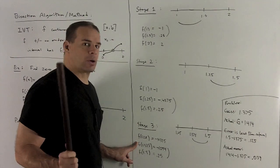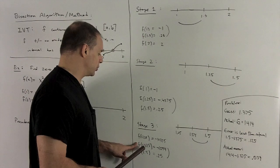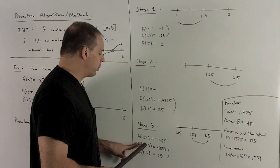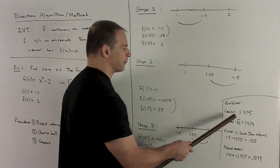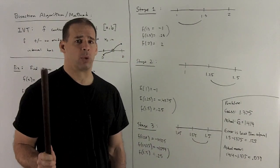So my estimate for the 0 is going to be where I stop. It's going to be the last midpoint I choose. So my estimate is going to be 1.375. The actual here is going to be 1.414.